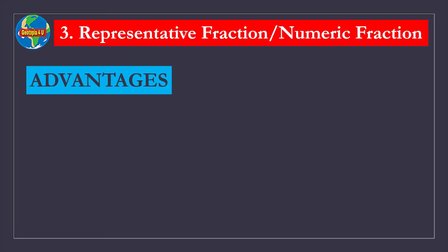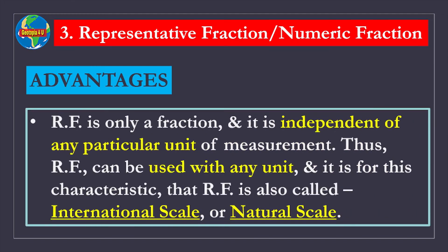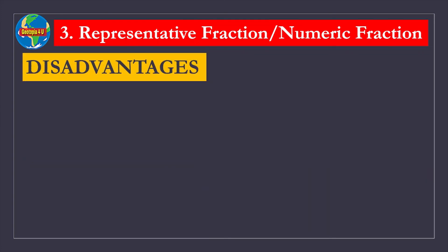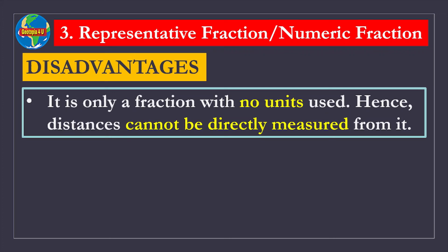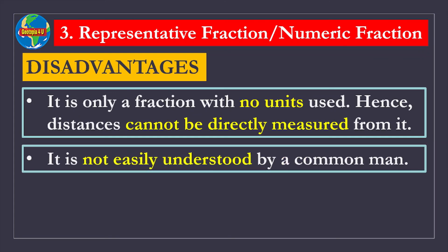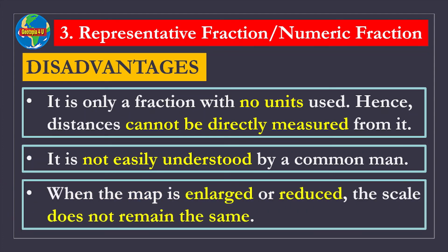Advantages of representative fraction: RF is only a fraction and it is independent of any particular unit of measurement. Thus, RF can be used with any unit, and it is for this characteristic that representative fraction is also called international scale or natural scale. Disadvantages: It is only a fraction with no units used, hence distances cannot be directly measured from it. It is not easily understood by a common man. When the map is enlarged or reduced, the scale does not remain the same.